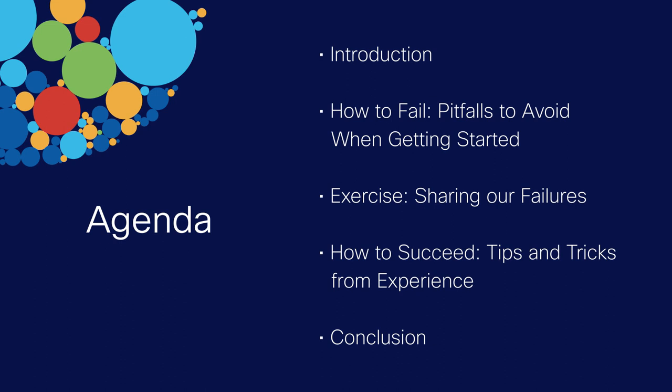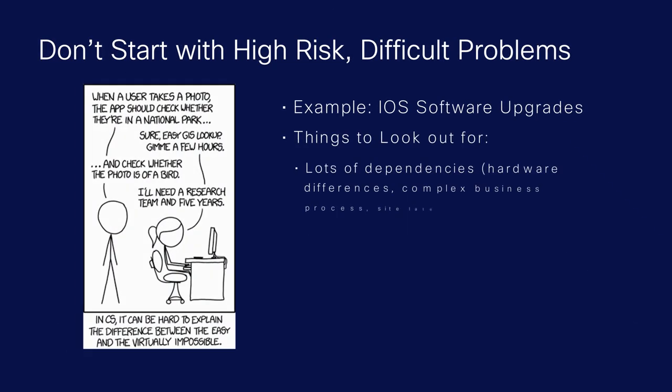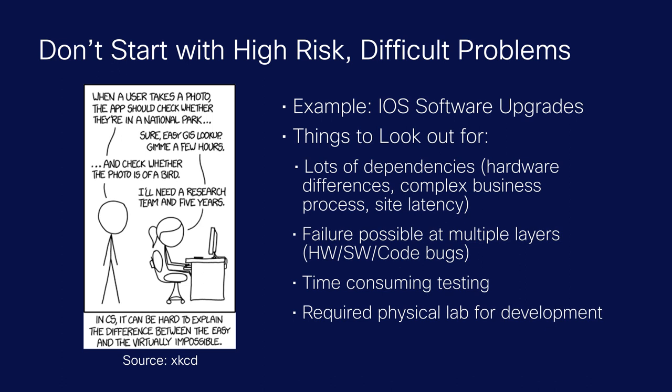Getting started: how to fail. Pitfalls to avoid when getting started. The first one: don't start with high-risk and difficult problems. When you first get started in network automation, you get excited about the potential, all the possible things you can do with new tools, the architectures you've seen, the promises and demos of network automation going end to end. But build up momentum within your team — make sure people feel that what you're accomplishing is trustworthy and going to make an impact in the long run.